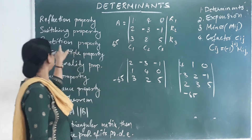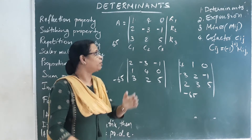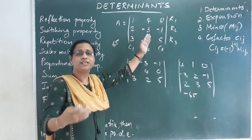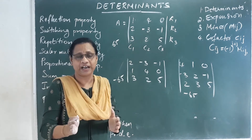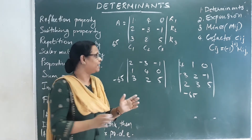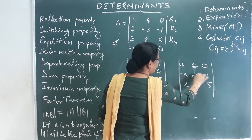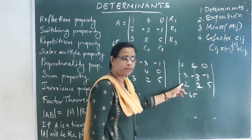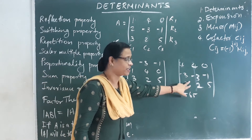The next property is the repetition property. In the repetition property, if two adjacent rows or two adjacent columns are the same, the value of that determinant should be 0. So if adjacent columns are the same, the determinant value is 0.